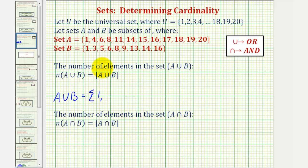So we'd have one, three, four, five, six, eight, nine, eleven, thirteen, fourteen, fifteen, sixteen, seventeen, eighteen, nineteen, twenty.